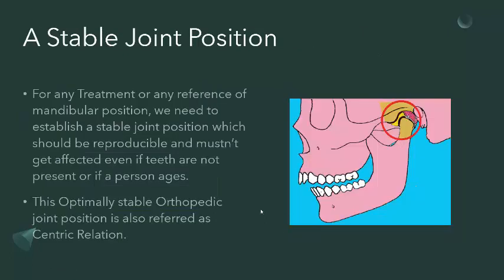We require a stable joint position for any treatment and any diagnosis. For ages we have been using the term centric relation for this stable joint position — a position where there is not going to be any change even if the patient loses their teeth or even if they age.